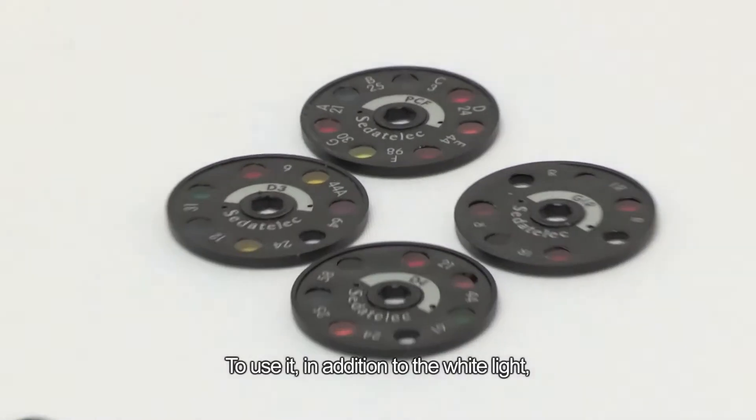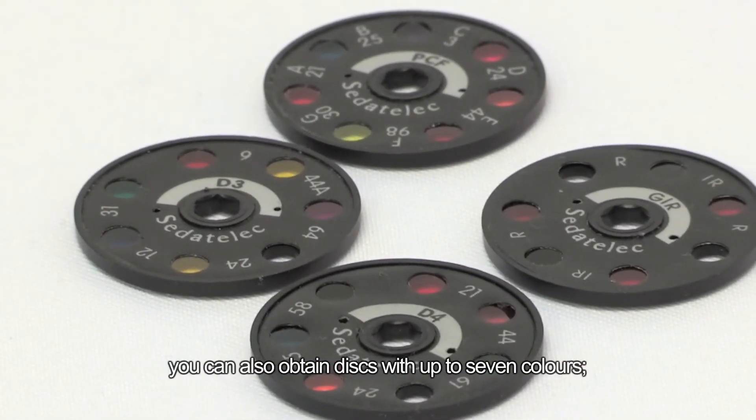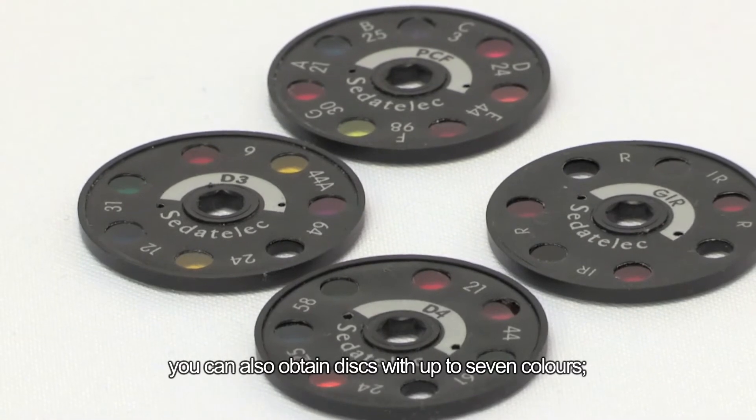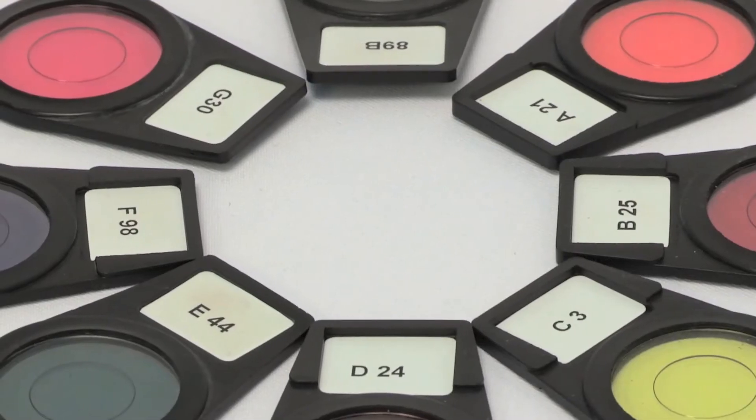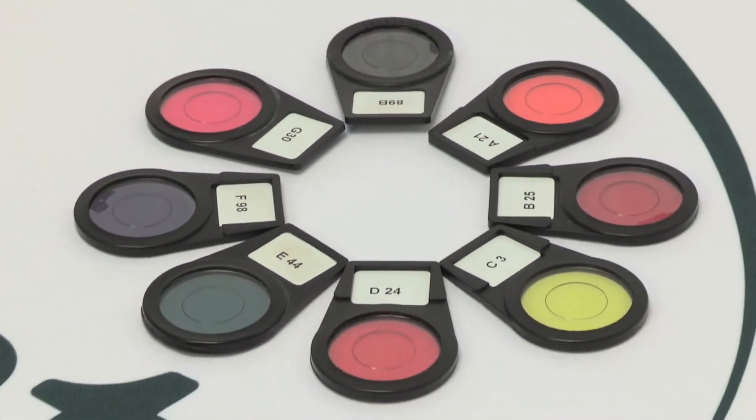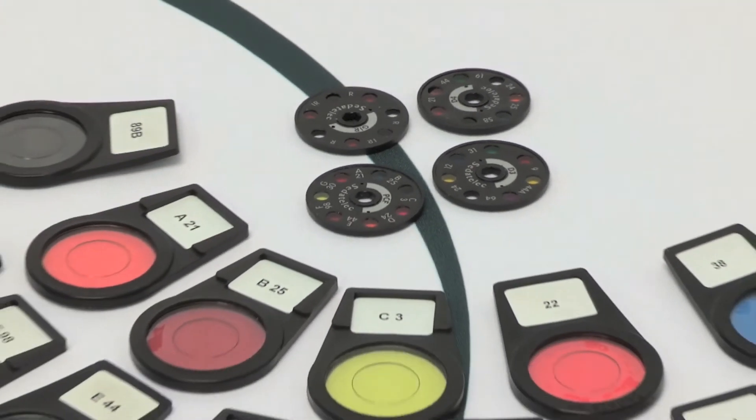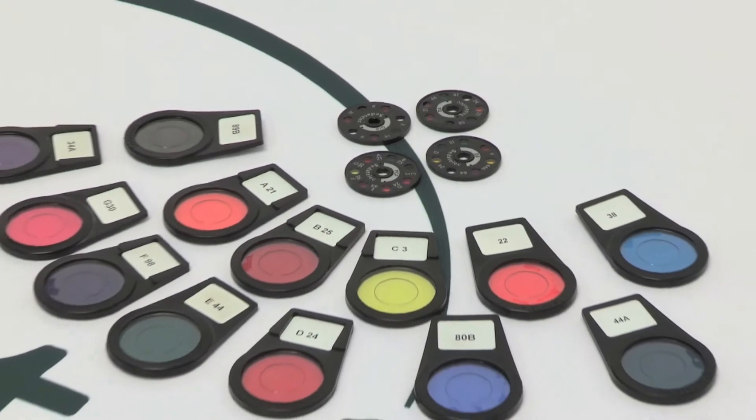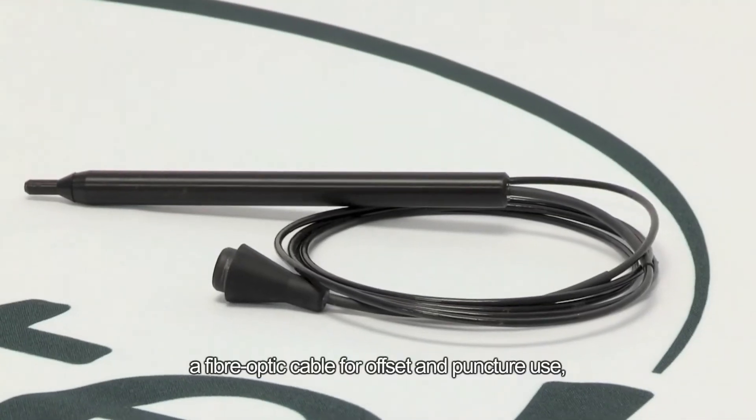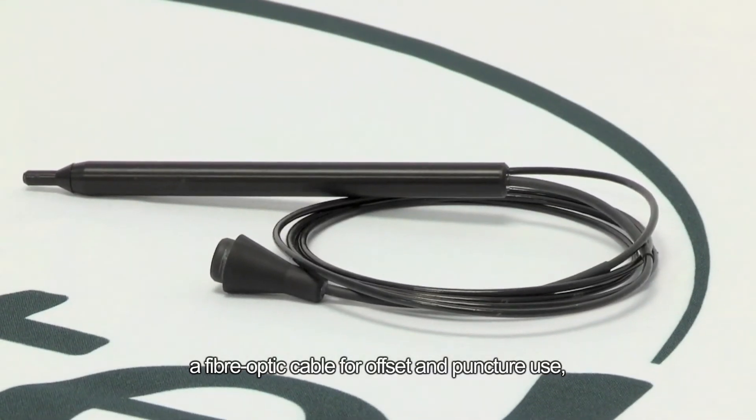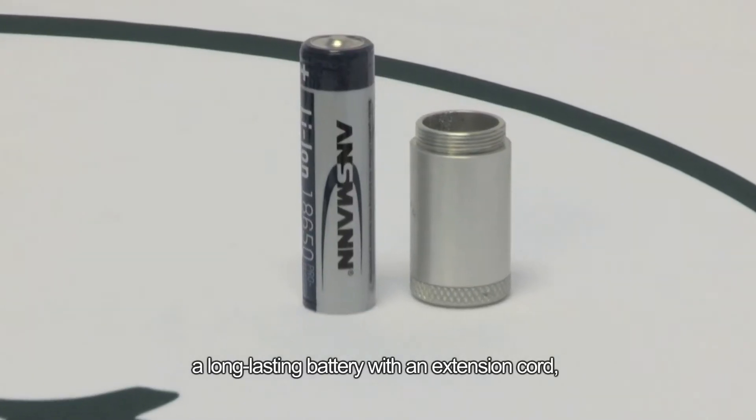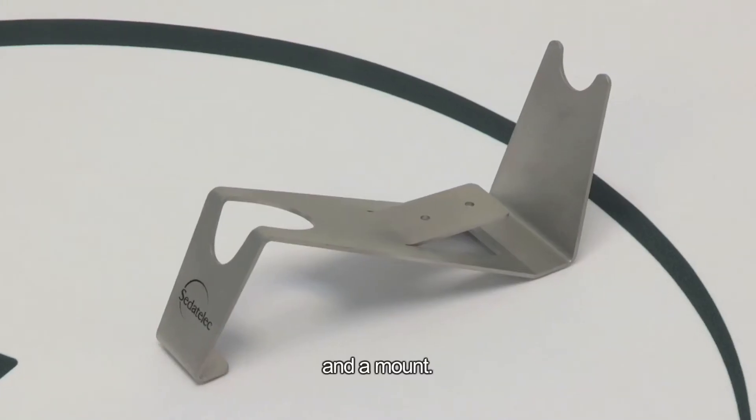To use it, in addition to the white light, you can also obtain discs with up to 7 colors, individual colored filters to be chosen from amongst the 150 Siddetelec filters, a fiber optic cable for offset and puncture use, and a long-lasting battery with an extension cord and a mount.